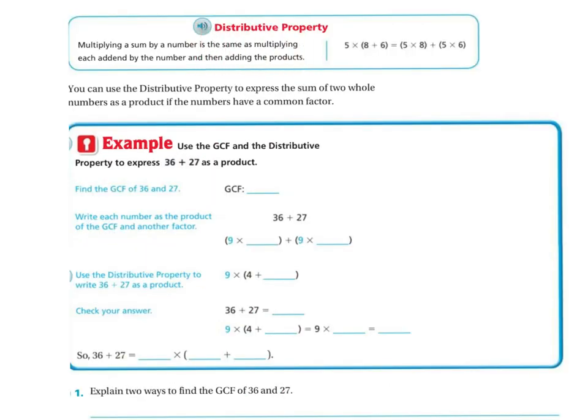Distributive property. So multiplying a sum by a number is the same as multiplying each addend by the number and then adding the products. So for example, if I have 5 times, and then I have the 8 plus 6 inside, it's the same thing as having 5 times 8, 5 times 6, and then adding those two together.